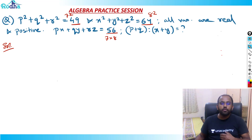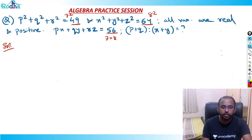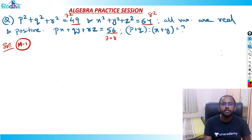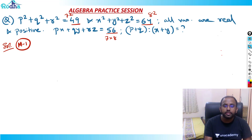So let's solve by both methods. Method 1 is more of a typical algebra method. How do you combine this?